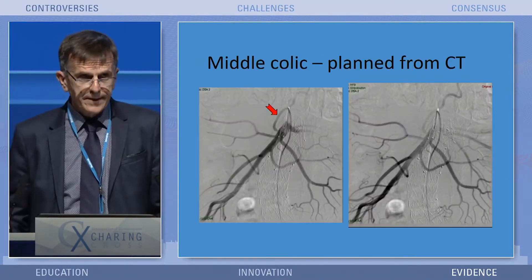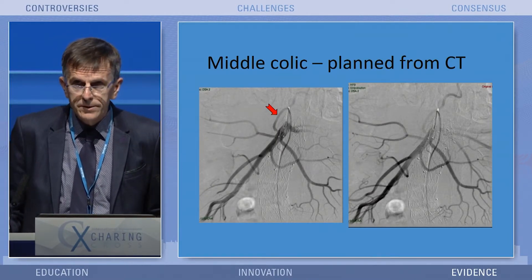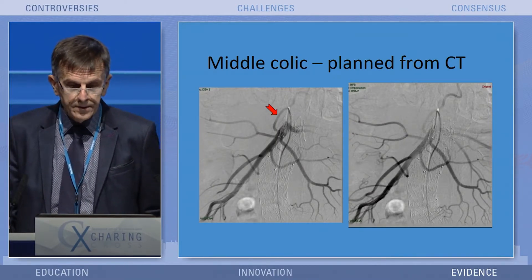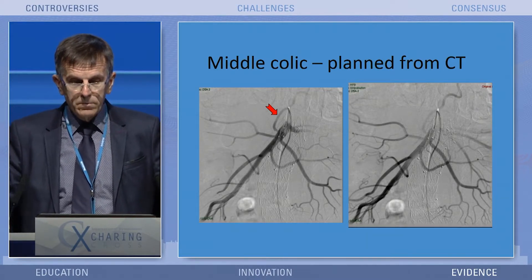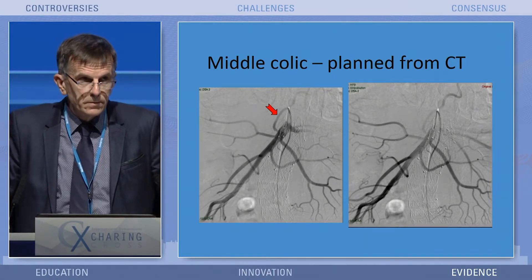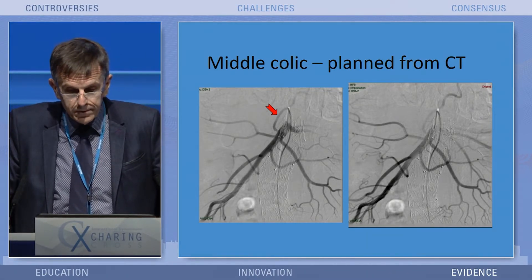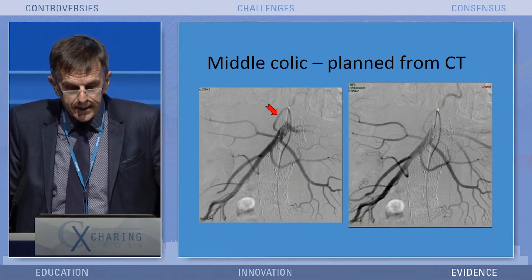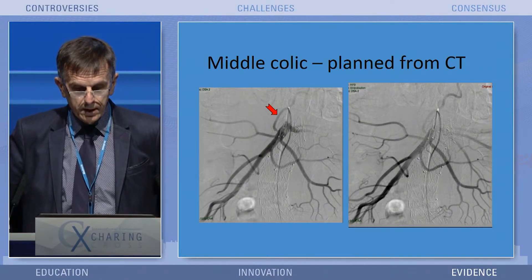One of the key aspects of the transarterial approach is to think your way in from the CT scan. You should know where the branch is and what projection will show it before you start the case. The SMA has too many branches to be making it up as you go along.